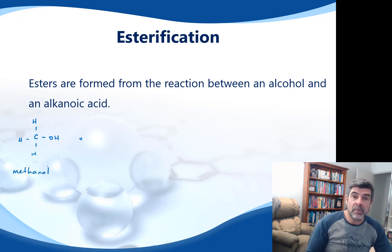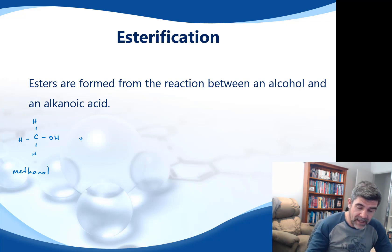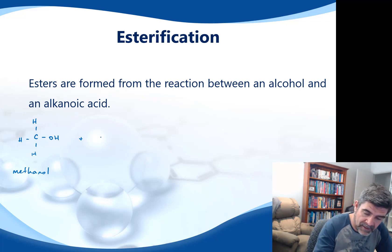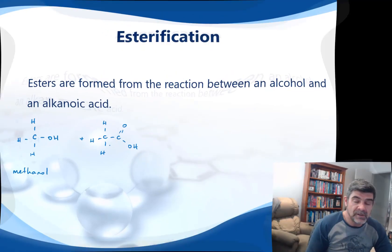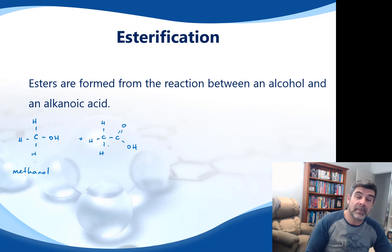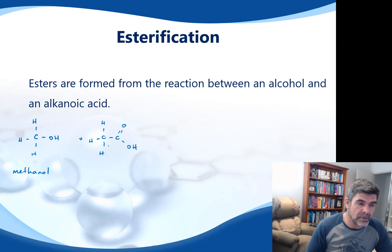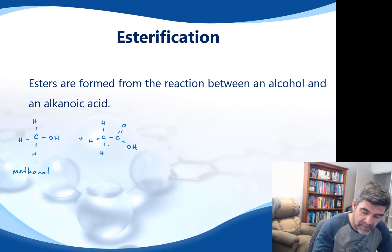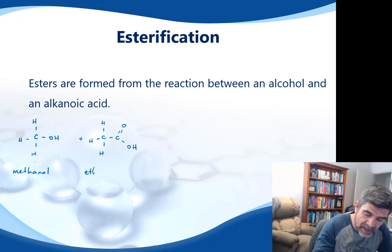The second one I want to look at is an alkenoic acid. You can see that the COOH is the characteristic functional group for our acids, and the fact that it has two carbons means it's going to be ethanoic acid.